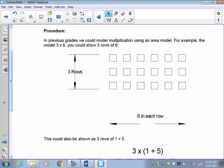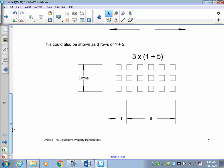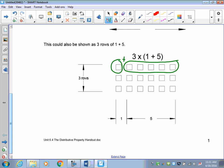But this could also be thought of as 3 rows of 1 plus 5. For example, here's the 5 right here, and here's the 1. So it could also be thought of as 3 rows of 1 plus 5.